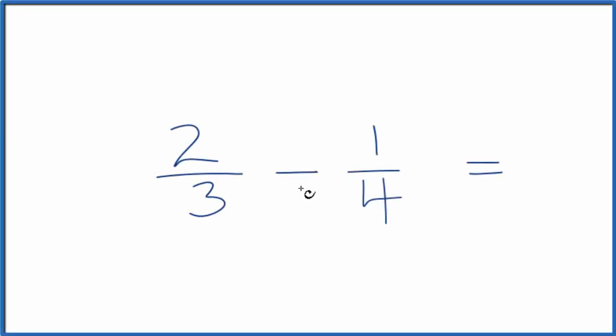Let's subtract the fractions 2 thirds minus 1 fourth. What we're trying to find is the fraction 2 over 3 minus 1 over 4. What fraction answer do we end up with?